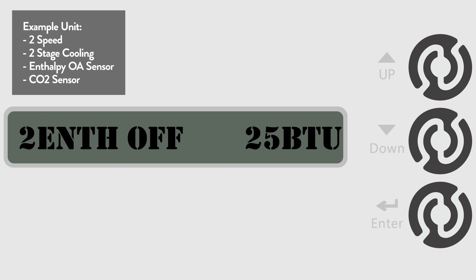The next several screens deal with CO2 sensors. In the 5 configuration state, we told the controller we had a CO2 sensor and we set the sensor voltage. These next adjustments will set the minimum and maximum damper position settings for the controller when not in free cooling. These settings are made by adjusting the voltage to the economizer actuator. Since we have a 2-speed unit, we have a minimum position damper setting for low and high speed, and a maximum position damper setting for low and high speed. The minimum position setting will be used if the space has a low level of occupancy or CO2. The maximum position will be used if the space has a higher level of occupancy.